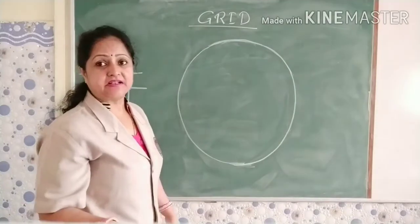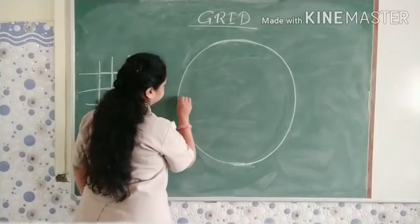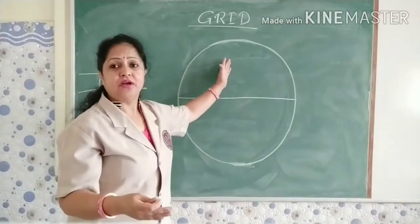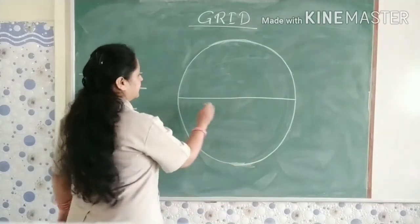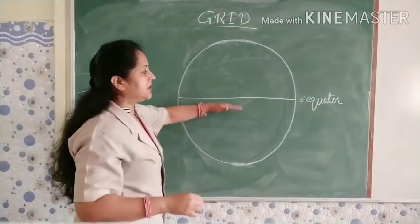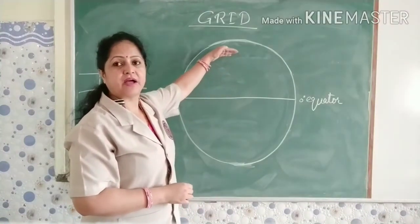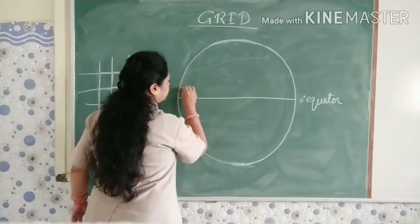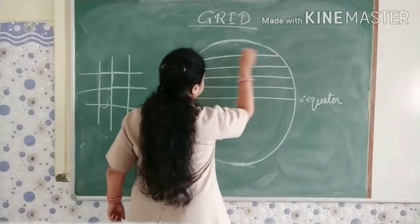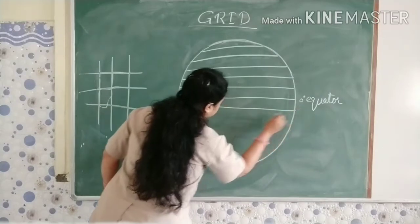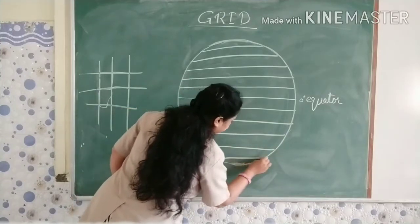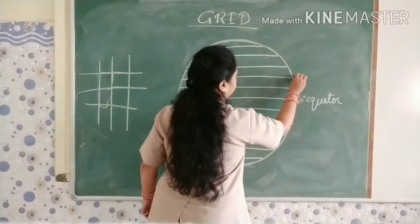First I will start drawing with the parallels of latitude. From here I am not going to draw all 90 lines — I will draw only a few lines so that it is easy to see and understand. So 0 degrees equator, and from here after every one degree we have one parallel of latitude up to 90 degrees. I am drawing only a few lines here. You can see I am drawing the lines in the northern hemisphere, and in the same way I will draw lines in the southern hemisphere also. So these all are the parallels of latitude.